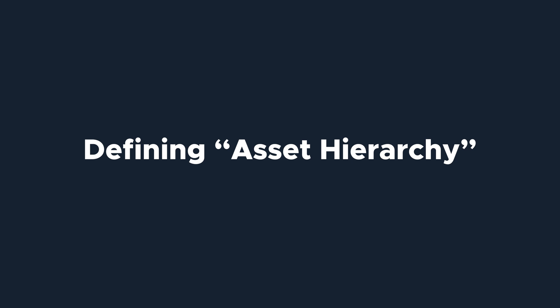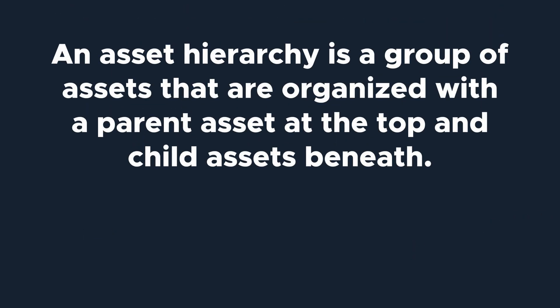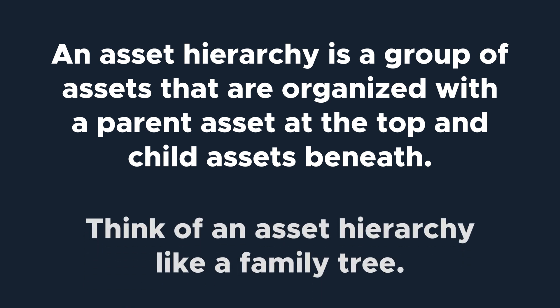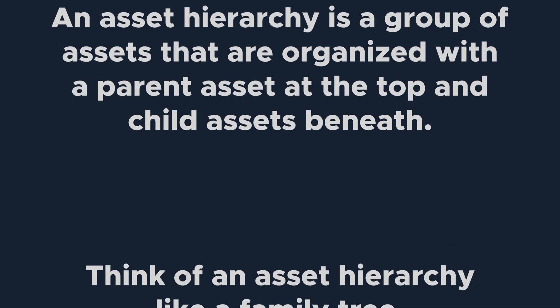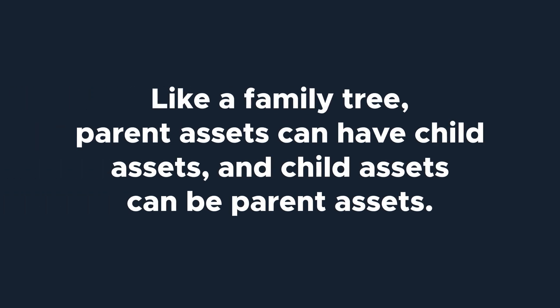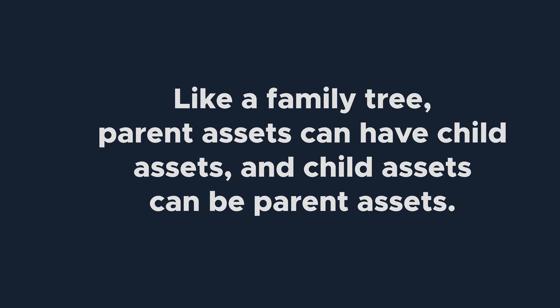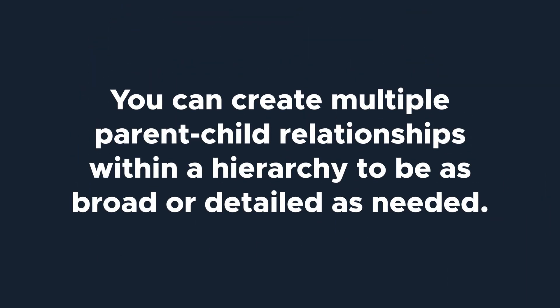First, let's talk about what an asset hierarchy is and how it functions in Limble. An asset hierarchy is a group of assets that are organized with a parent asset at the top and child assets beneath. Think of it like a family tree — parent assets can have child assets, and child assets can also be parent assets.